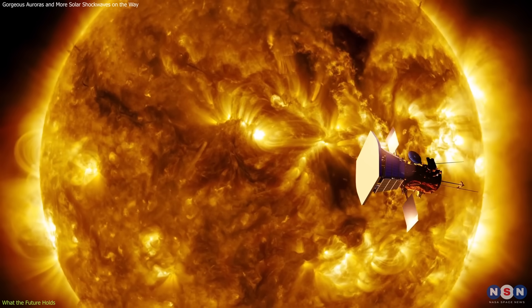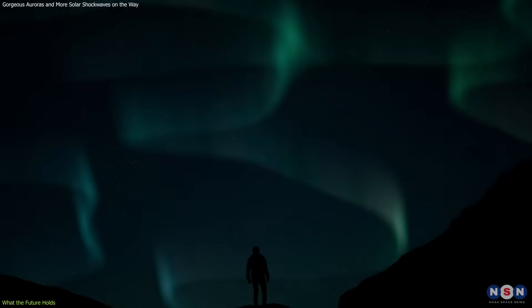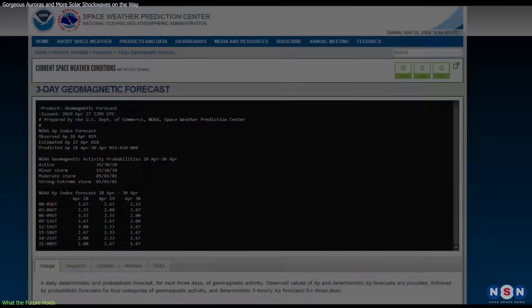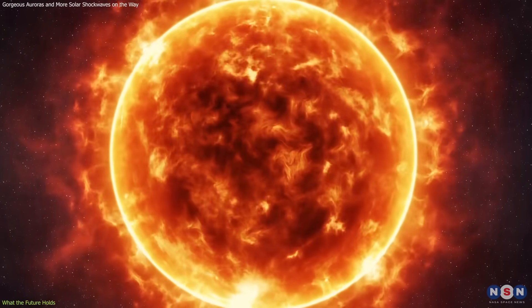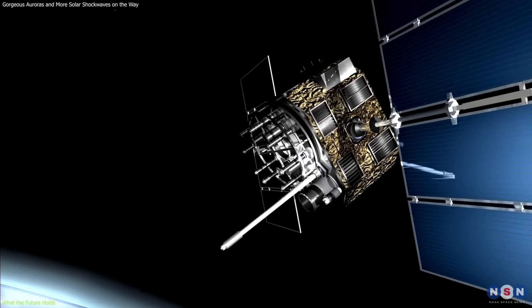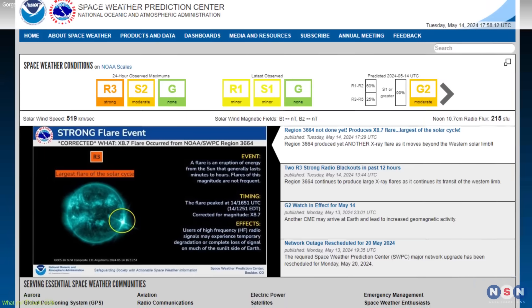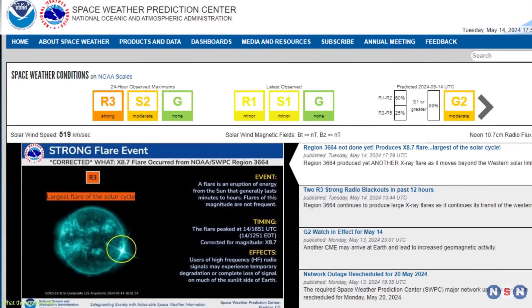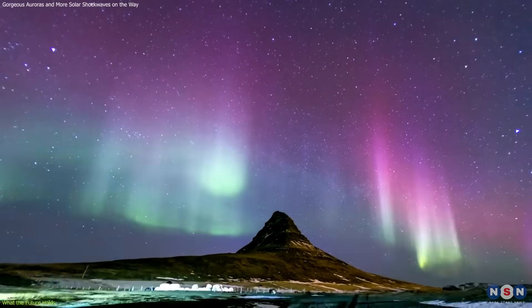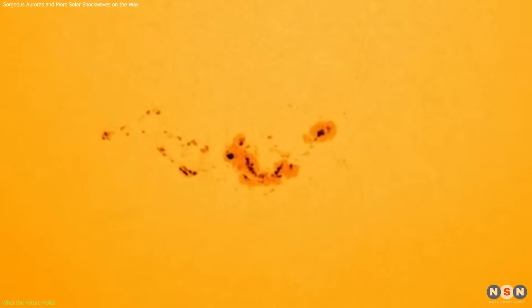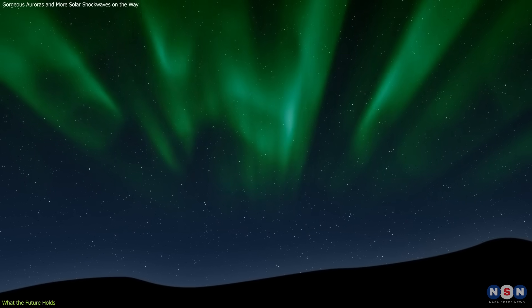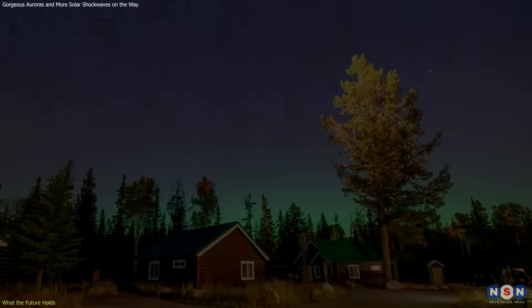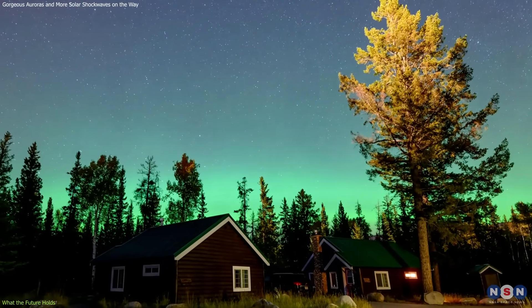Advancements in technology have significantly improved our ability to predict when and where auroras will appear. Agencies like NOAA and NASA monitor solar activity and geomagnetic conditions using a network of satellites and ground-based instruments. These tools provide real-time data crucial for forecasting space weather, including auroral activity. For example, the activity from AR 3664 has been closely monitored, allowing scientists and aurora enthusiasts to anticipate unusual auroral displays even in locations far south of the typical auroral zones.